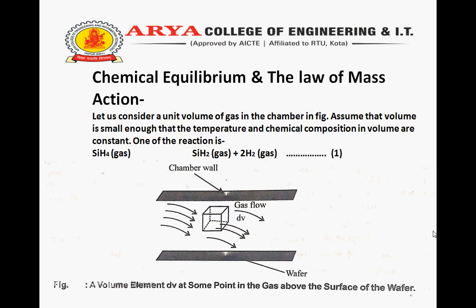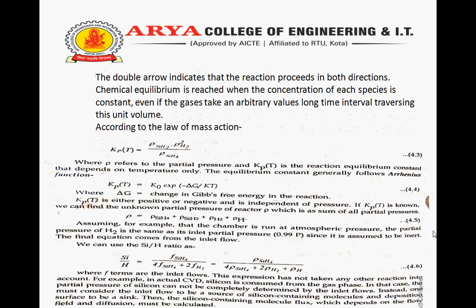Chemical equilibrium is reached when the concentration of each species is constant, even if the gases take an arbitrary value over a long time interval traversing this unit volume. According to the Law of Mass Action, Kp(T) = ρ(SiH2) · ρ²(H2) / ρ(SiH4), where ρ refers to the partial pressure and Kp(T) is the reaction equilibrium constant that depends on temperature only.